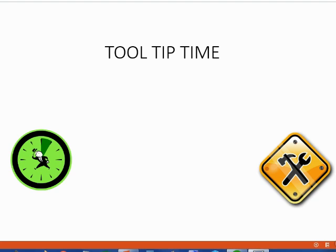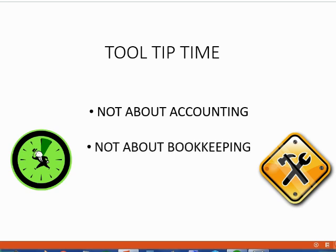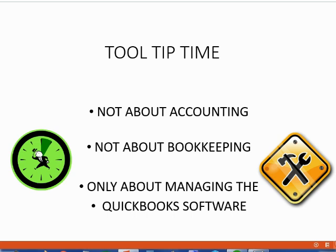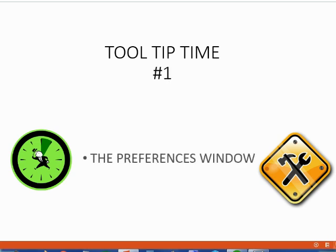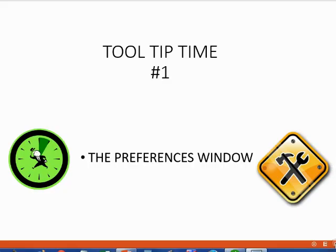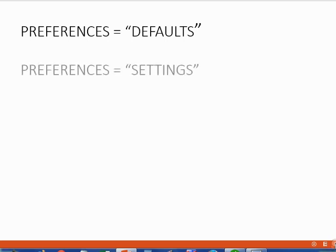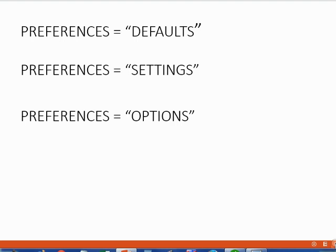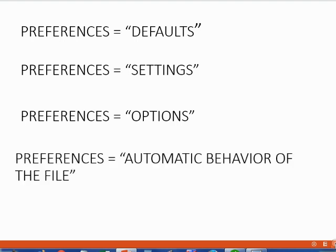Welcome to our first tooltip video. These tooltip videos are not about accounting or bookkeeping — they are only about managing your QuickBooks software. The first tool we will learn about is the Preferences window. When QuickBooks uses the word Preferences, it means the defaults, the settings, the options — in short, the automatic behavior of the file unless the user specifically changes it by opening the Preferences window.